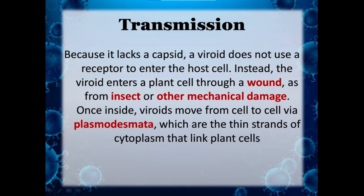The transmission of viroids: because it lacks a capsid, a viroid does not use a receptor to enter the host cell. Instead, the viroid enters a plant cell through wounds generated by an insect or from other mechanical damage. Once inside the plant, the viroid moves from cell to cell via plasmodesmata, which are thin strands of cytoplasm that link all the plant cells.